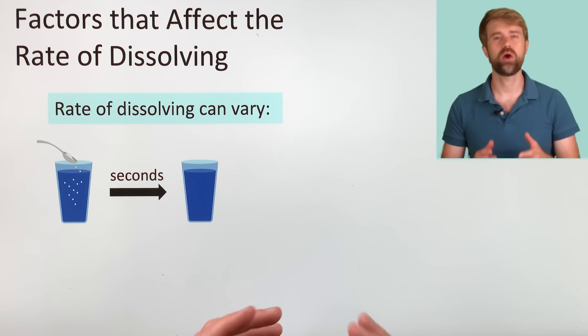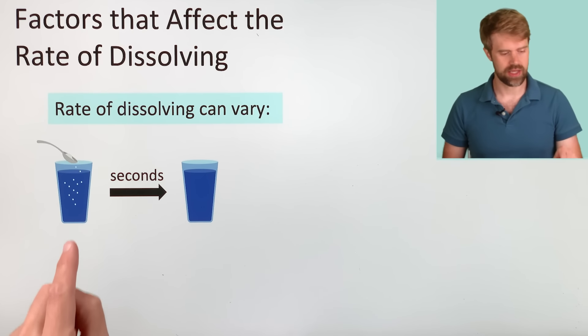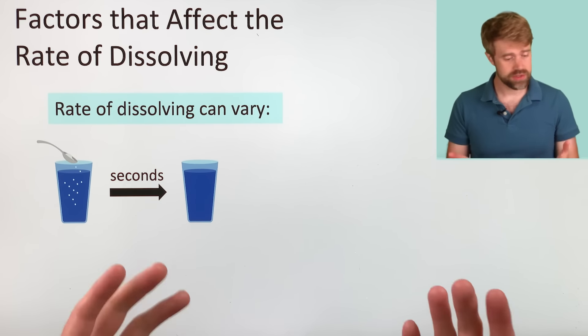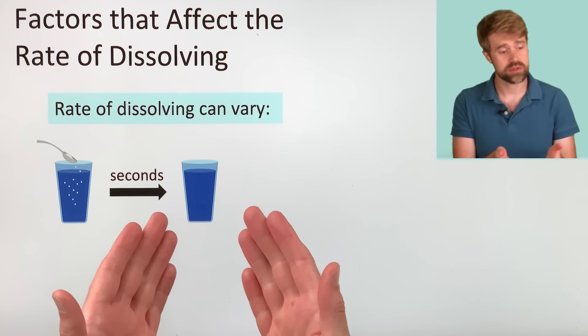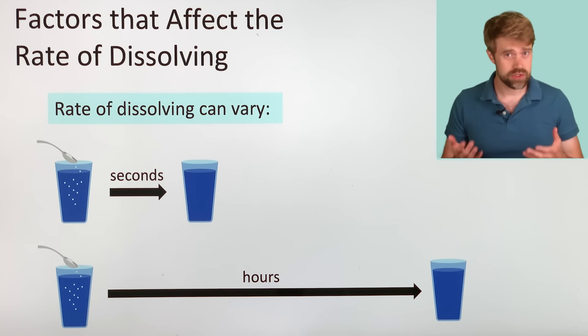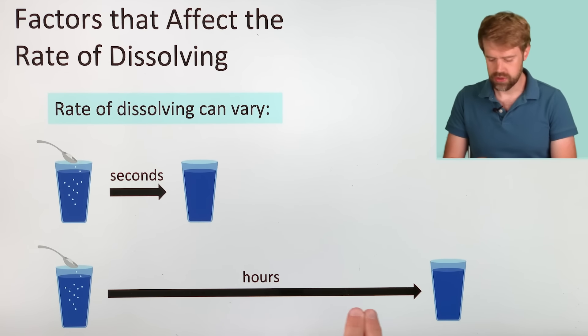The rate of dissolving can vary quite a lot. Let's say we have one teaspoon of sugar and we're dissolving it in a glass of water. In one situation, that sugar could fully dissolve in just a few seconds. In another situation, it could take hours for the sugar to fully dissolve.